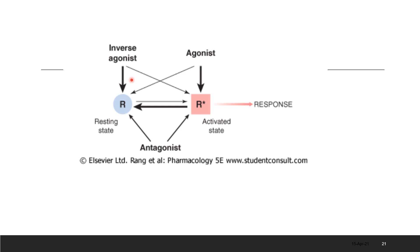With that, we end today's lecture. Your assignment: define agonist, inverse agonist, partial agonist, and antagonist with respect to their affinity and efficacy. In the next lecture, we'll discuss examples of these drugs and further details about the different types of receptors. We'll also cover types of drug antagonism, so this topic will be covered in two to three more lectures. Allah Hafiz to all of you, and best of luck with your assignment.